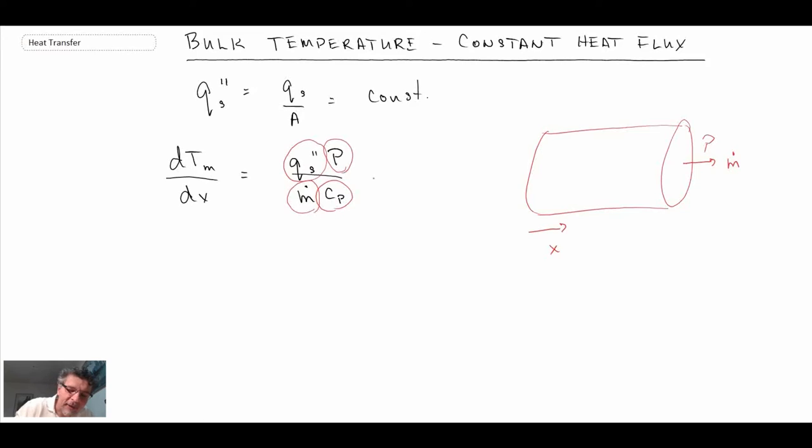So with that, what that tells us is that this is equal to a constant and it is not a function of x. So that's an interesting result. It's telling us that the temperature gradient is going to be a constant, so what does that mean? That means that temperature is going to change at the same rate with position.